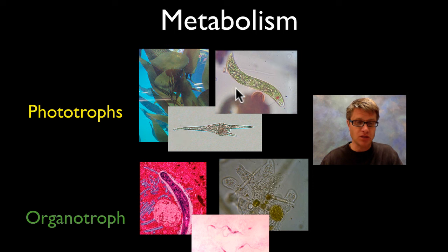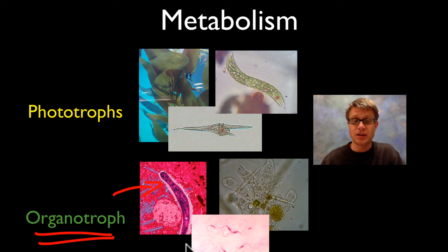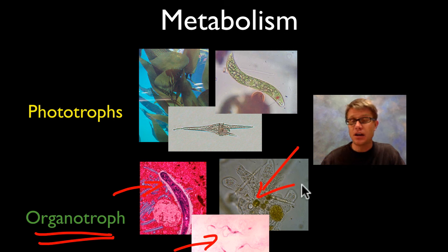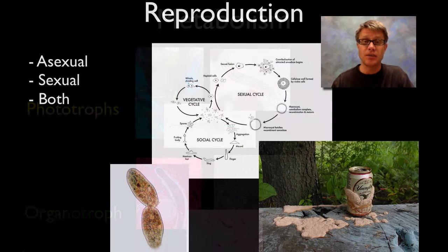We also have a bunch of organotrophs — feeding organisms. The plasmodium that causes malaria is actually living in both the liver and the red blood cells. We have trypanosomes. We have an amoeba that's going to feed on other protists. These aren't making their own energy — they're actually eating food and getting energy from that.